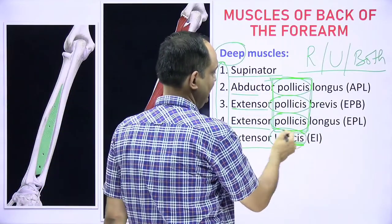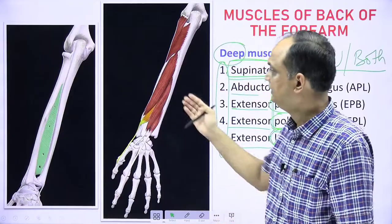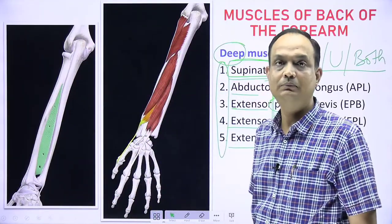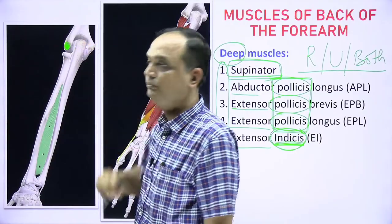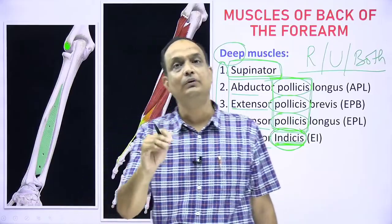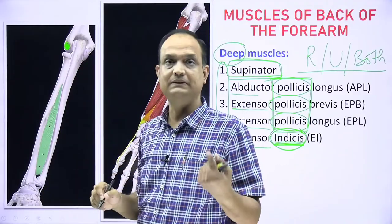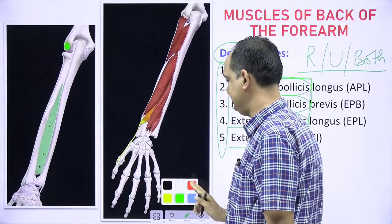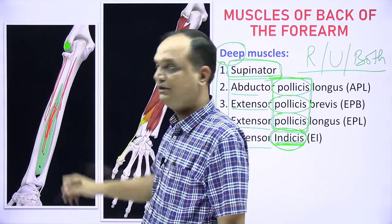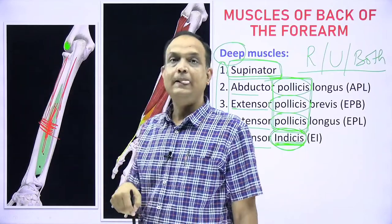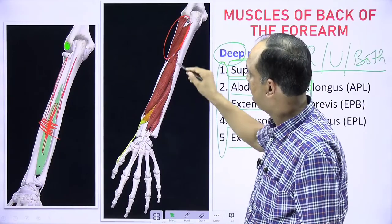One deep muscle is specifically for the index finger (extensor indicis), and one — the supinator — is present in the upper part for supination. On the diagram showing the posterior surface of the forearm bones, the superficial muscles arise from the lateral epicondyle of the humerus, while the deep muscles arise from the radius, ulna, or the posterior part of the interosseous membrane.